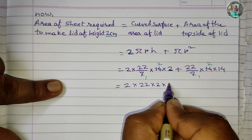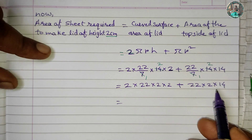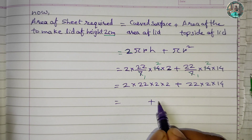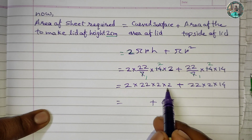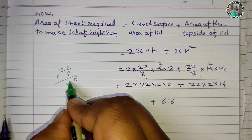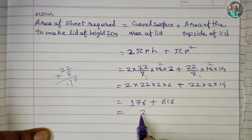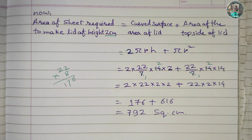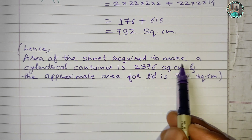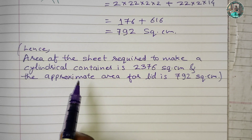After calculation: 2 × 22 × 2 × 2 plus 22 × 2 × 14 gives 176 plus 616, totaling 792 square centimeters. So the area of the sheet required to make the cylindrical container is 2376 square centimeters, and the approximate area for the lid is 792 square centimeters.